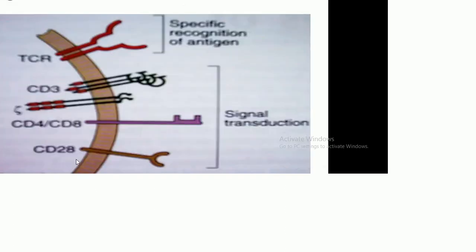Another receptor is CD2 and CD28, which binds to CD80/B7-1, and their function is in signal transduction. This is the summary of the T cell receptors.